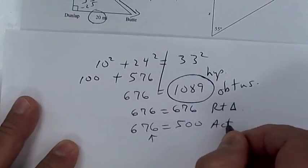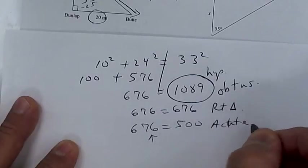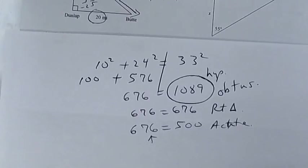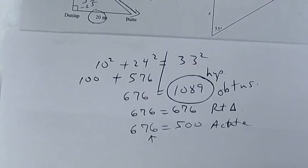You have three possibilities here: if they're equal, it's a right triangle; if the hypotenuse is bigger, it's obtuse. Is everybody clear on that one?